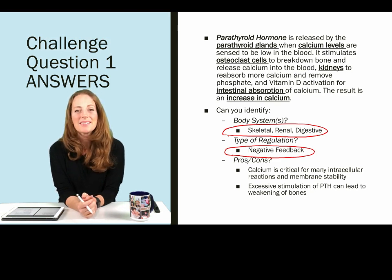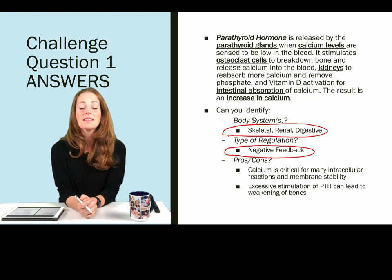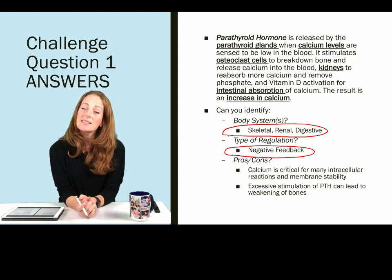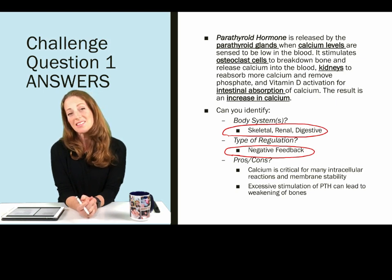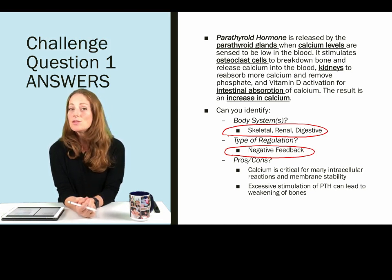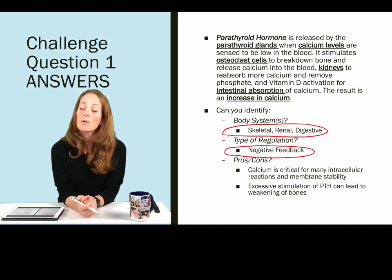What about pros and cons? This system is especially critical for calcium homeostasis. Calcium is critical for biochemical reactions and membrane stabilization. Drawbacks occur when the system is over-activated or activated under abnormal conditions. Hyperparathyroidism — which we'll discuss during the endocrine system — causes weakening of bones. Too much breakdown of bones to release calcium can cause an increase in fracture risk and brittle or weakened bones.